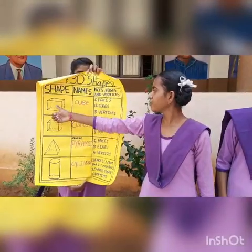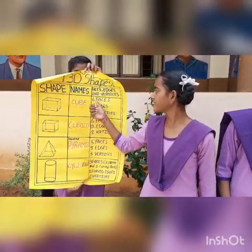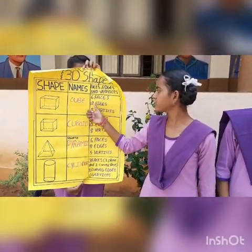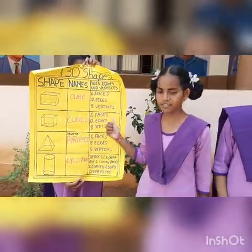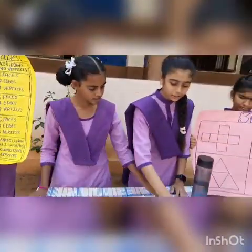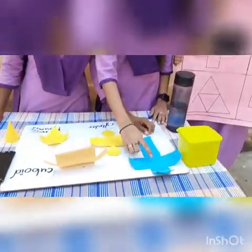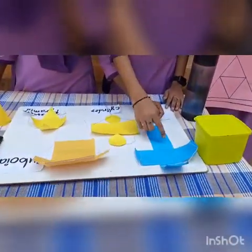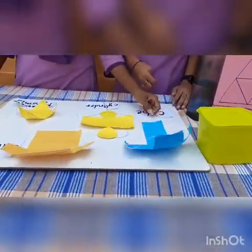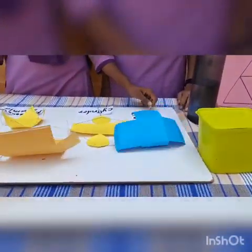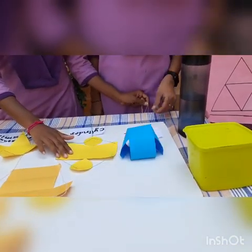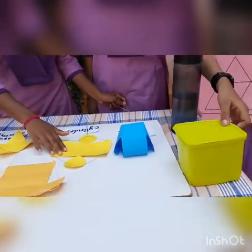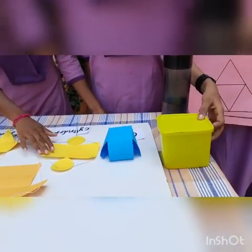First one is cube. Cube has 6 faces, 12 edges, and 8 vertices. Counting the faces: 1, 2, 3, 4, 5, 6 faces. This is the 3D picture of cube. This is the example for cube.